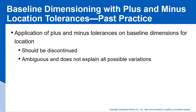One more point: application of plus or minus tolerances on basic dimensions for location should be discontinued — it's ambiguous and does not explain all possible variations. Again, the recommendation is to use GD&T, because it establishes a reference frame for your parts and removes all ambiguities in the inspection process. This is the last movie for Chapter 3. Thank you.